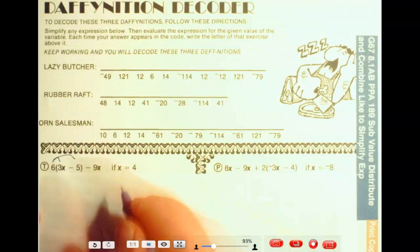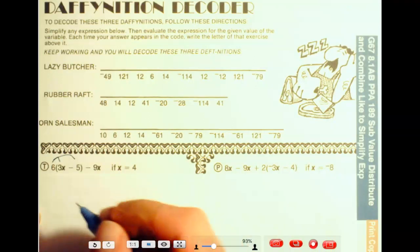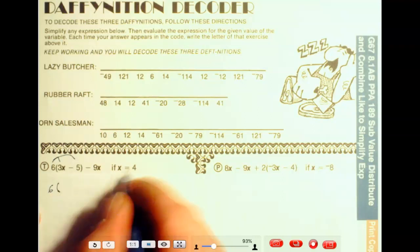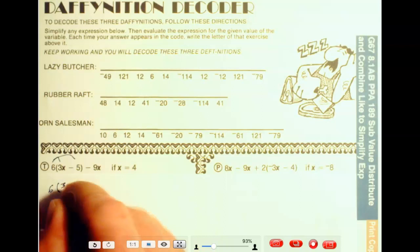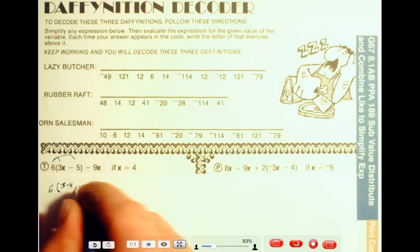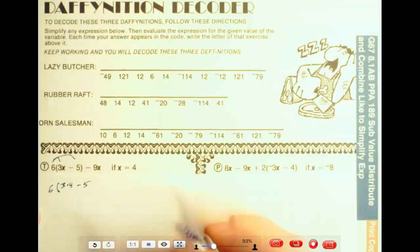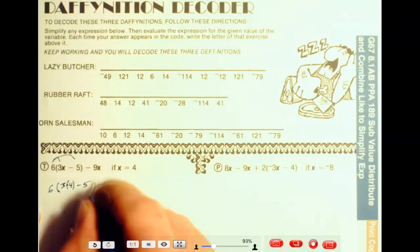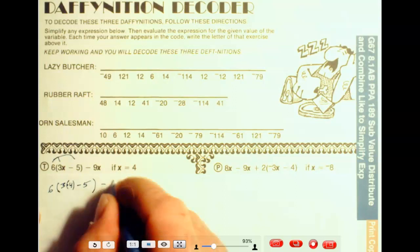I guess what I would do is substitute in the 4s right away, so you've got 6 times, and you've got f(x) is 4, that's going to be 3 times 4 minus 5. I'm going to put this in parentheses. That's going to be minus 9 times 4.